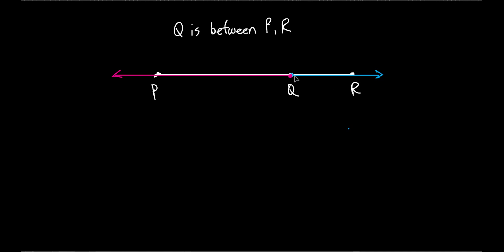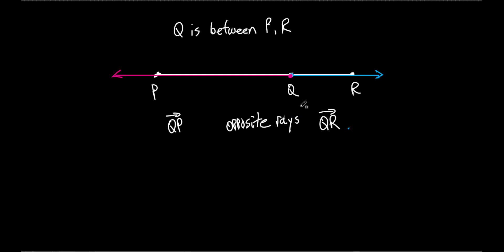So we have two rays: ray QR and ray QP. Even though ray QP is going to the left, I still write the symbol going to the right. We call these opposite rays, because they go in opposite directions. They're only opposite rays if the two rays together make a straight line — if one slanted up, they would not be opposite rays. You'll see opposite rays once in a while, but not often.